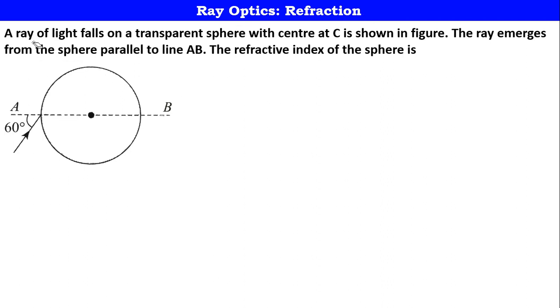A ray of light falls on a transparent sphere with center at C as shown in the figure. This is your center. The ray emerges from the sphere parallel to line AB. This dotted line is AB. The refractive index of the sphere is what? That is the question.